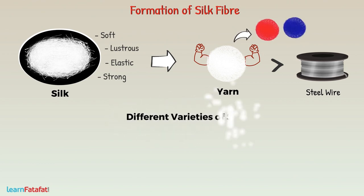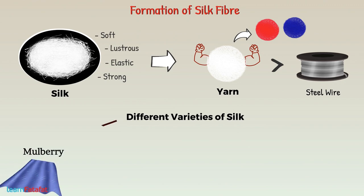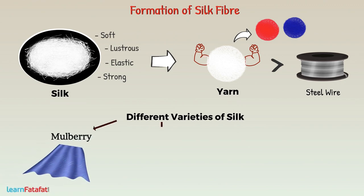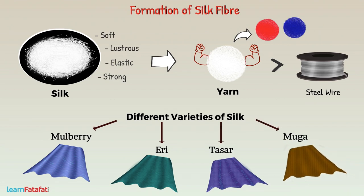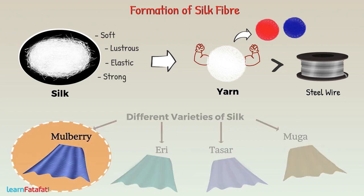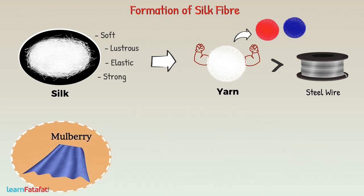There are different varieties of silk, of which mulberry, eri, tasar and mooga silk are of commercial importance. Most commercial silk is mulberry silk, which is a very fine white fiber.